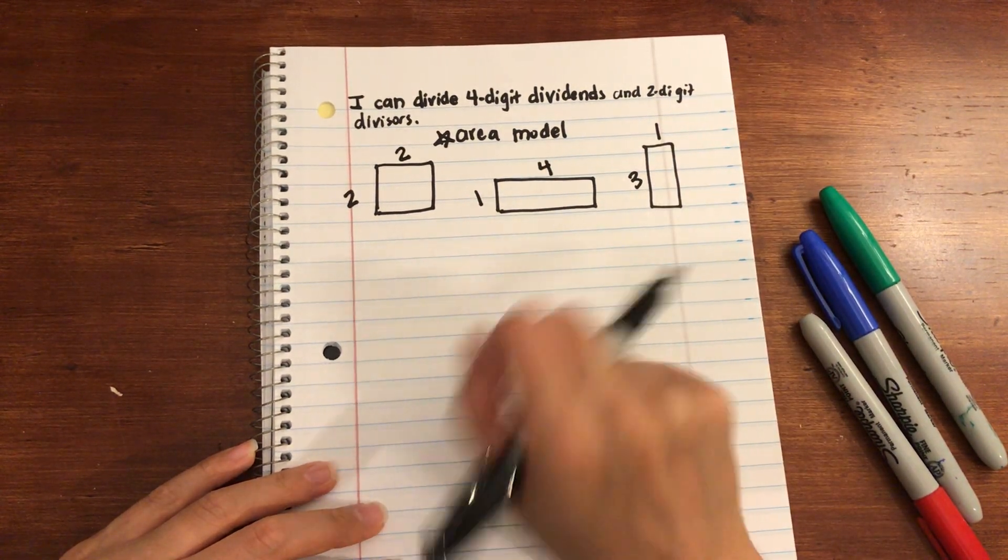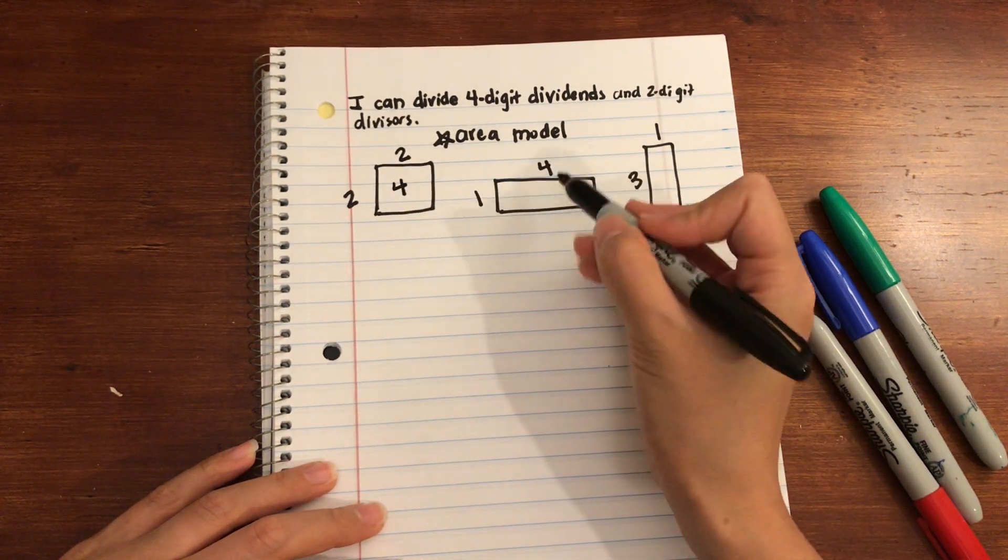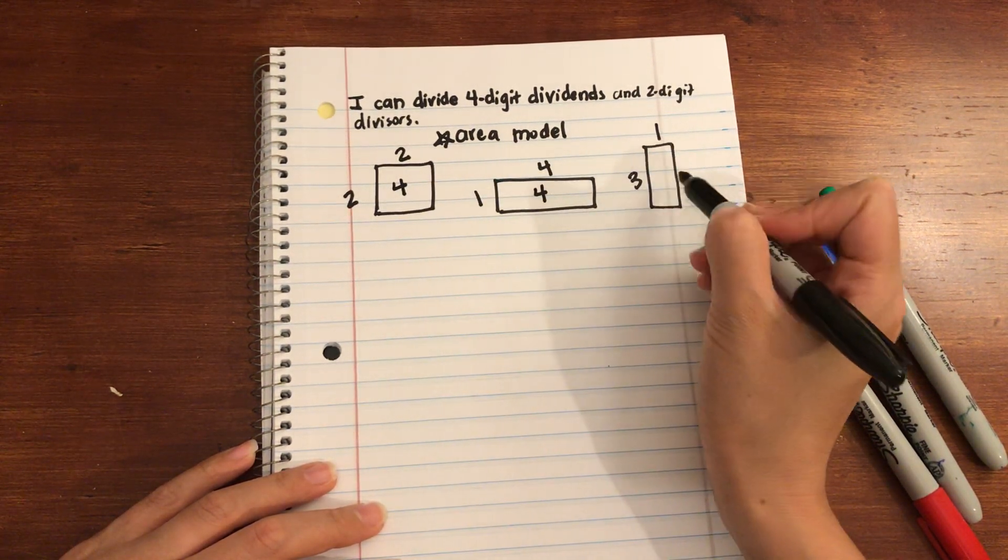So to find the area you do length times width, right? So we'll do 2 times 2 is 4, 1 times 4 is 4, and 3 times 1 is 3.